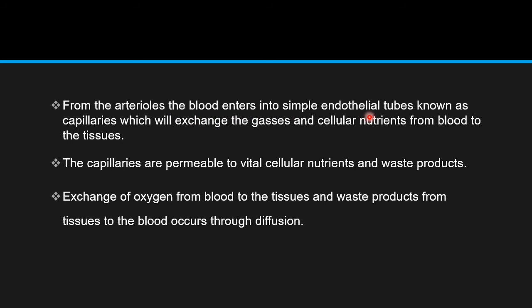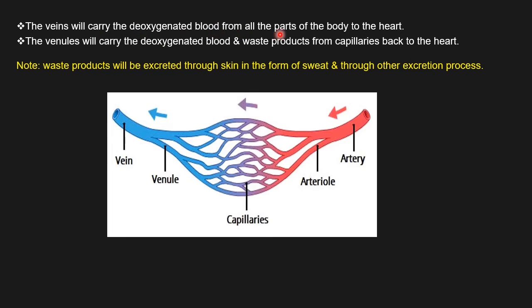Capillaries are simple endothelial tubes connected to tissues and different body parts, supplying blood for their systemic action. Exchange of oxygen and waste products from tissues to the blood occurs through diffusion. Through this diffusion process, oxygen from the blood enters into the tissues and carbon dioxide from the tissues enters into the blood of the capillaries. Nutrients and cellular molecules enter through diffusion into the tissues, and waste products from the tissues enter into the blood.